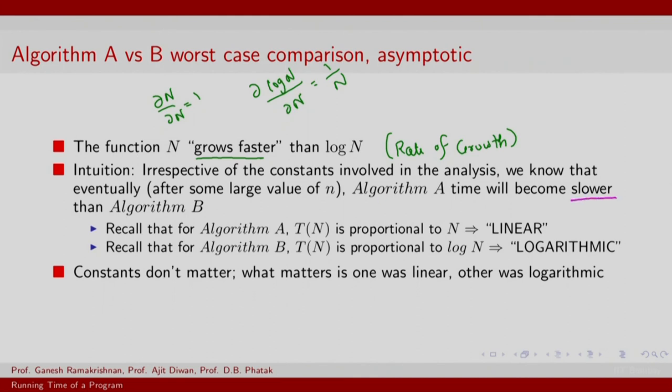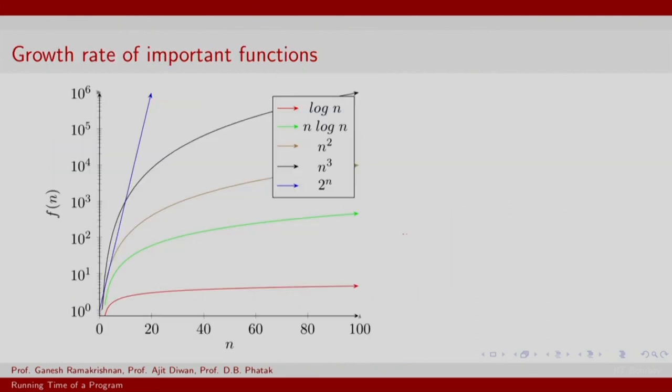So recall that T(N) for algorithm A was basically proportional to N, and we will give it a name called linear. For B, T(N) was proportional to log N. We give it a name logarithmic. What have we done in this process is we have ignored constants. Constants do not matter. What matters is that one was linear, the other was logarithmic, but again we need something more formal.